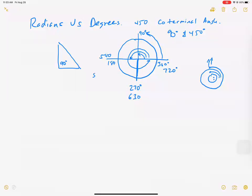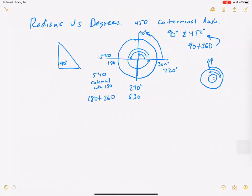Co-terminal angles are the same angle, just not necessarily on the same circle. For example, 540 is co-terminal with 180 — you'd be facing the same direction. Co-terminal angles are always related by 360 degrees, because it's just one full circle away. So 90 plus 360 is 450, and 180 plus 360 is 540. Every co-terminal angle is always 360 degrees away.